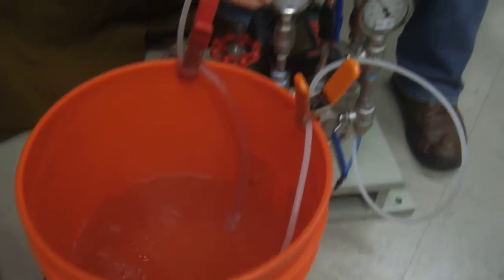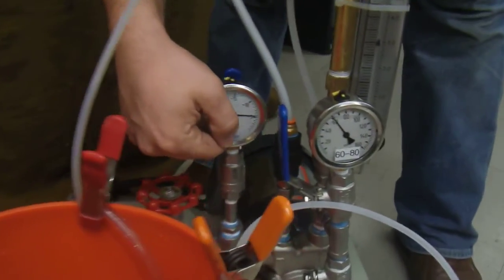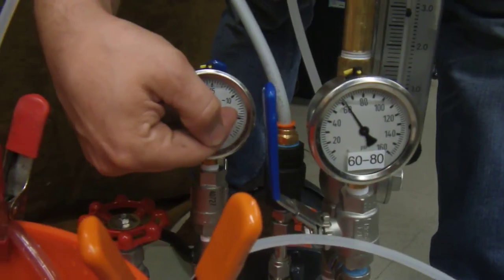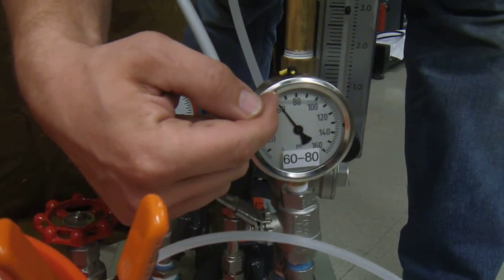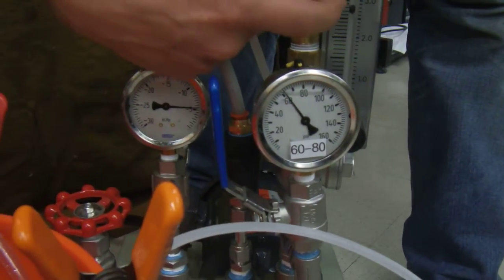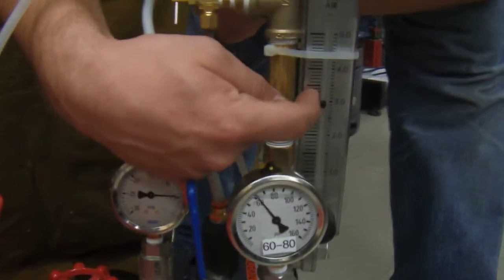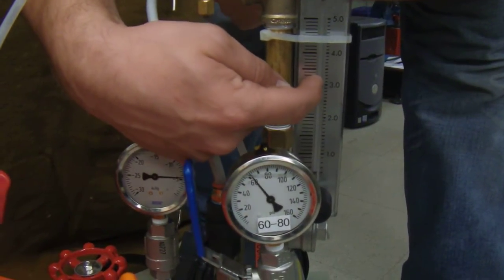So you can see right now that there's about 5 inches of mercury vacuum that's being pulled on the intake of this. And on the output is just over 60 psi. And the air inflow is 3 cubic feet per hour.